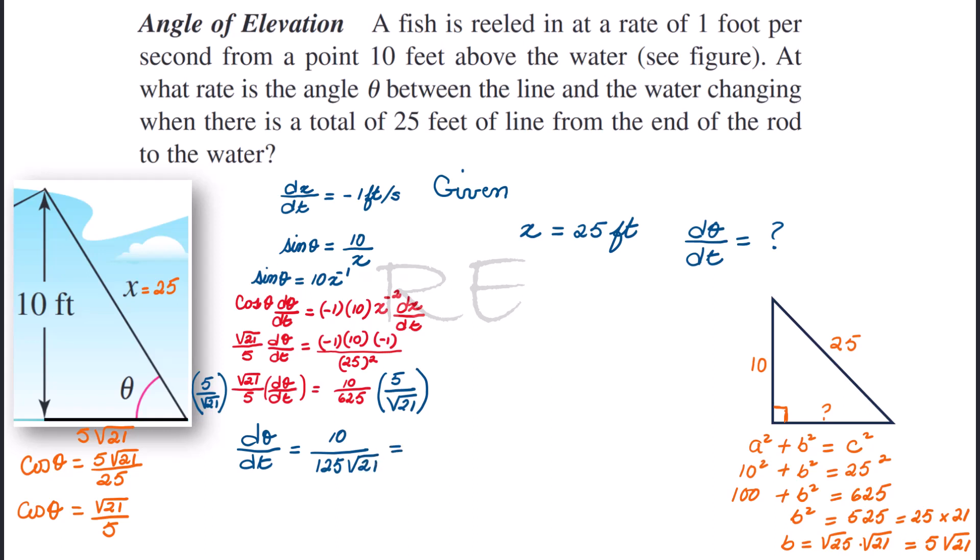And 10 is 2 times 5, so we divide by 5, we get 2. We divide 125 by 5, we get 25. So the final answer is 2 over 25 times square root of 21, which could be rationalized when we multiply it by square root of 21 over square root of 21. And this is the value found in your book: 2 square root of 21 over 525, approximately 0.017 radians per second.